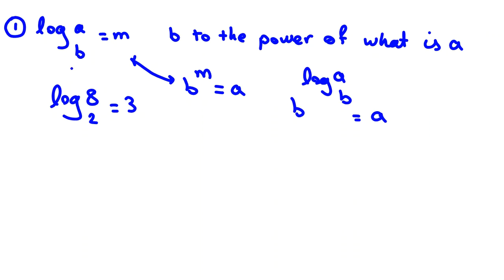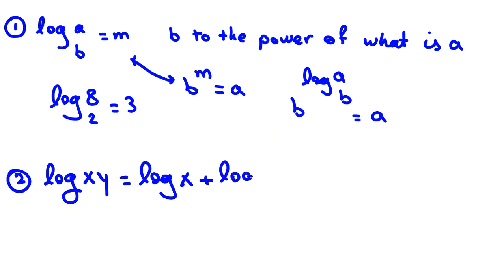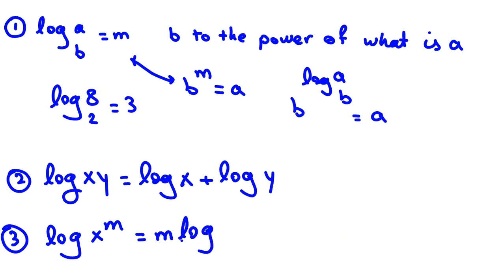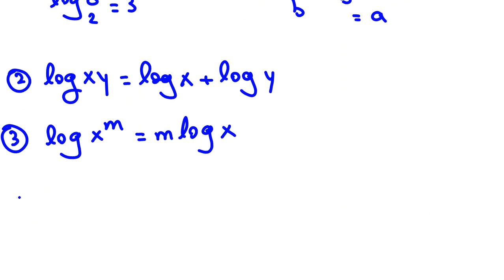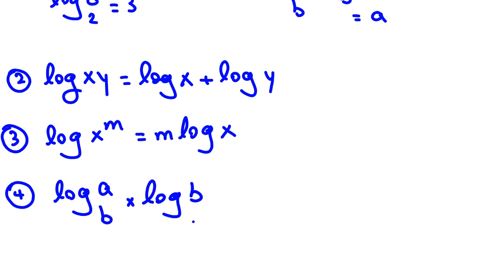When you have this base b, you raise b to the power of both sides. The second rule is: log(x·y) = log(x) + log(y). The third rule is: log(x^m) = m·log(x) — you can take m in front of the log. The next rule: log base a of b times log base b of c equals log base a of c — you cancel the b.